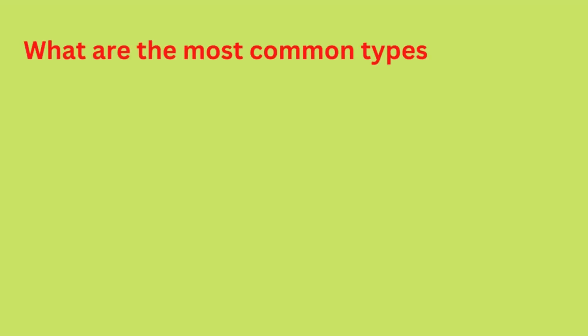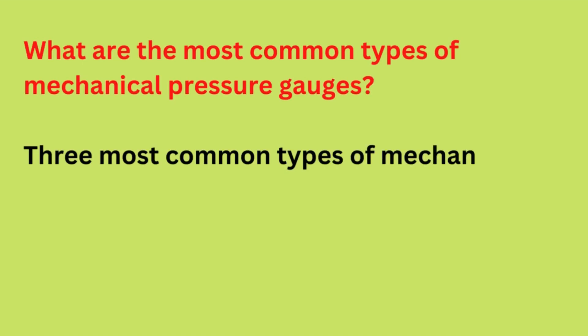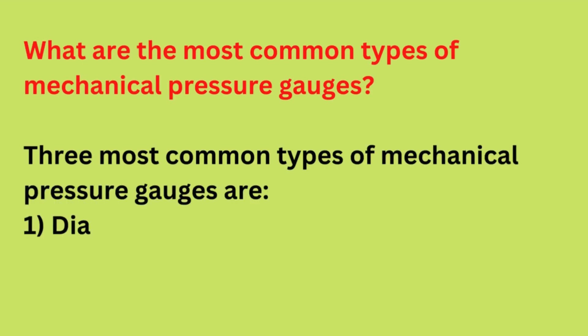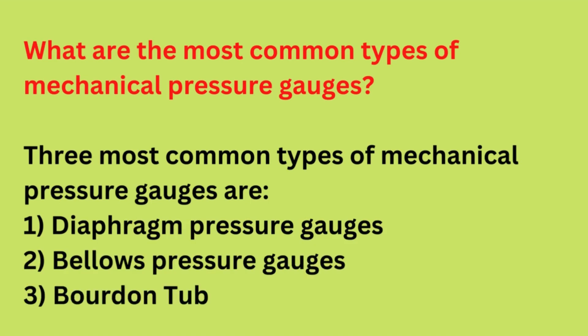What are the most common types of mechanical pressure gauges? The three most common types of mechanical pressure gauges are: 1. Diaphragm pressure gauges, 2. Bellows pressure gauges, 3. Bourdon tube pressure gauges.